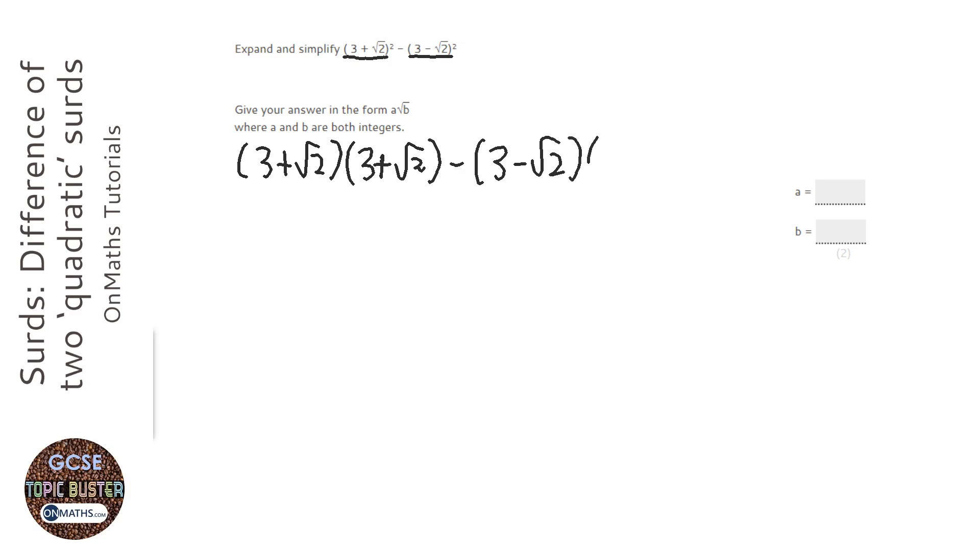Unfortunately, you can't get the right answer with just squaring the two of them because they are quadratics. So I'm going to write them out as two brackets because anything squared is itself times itself. Now we're going to expand these.